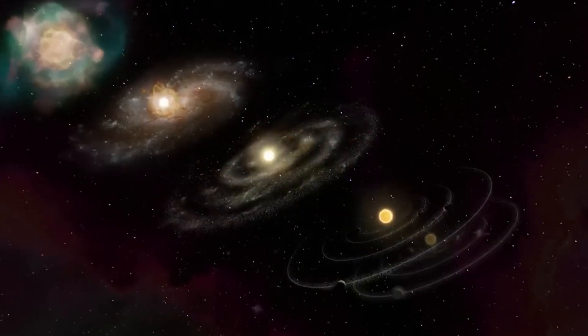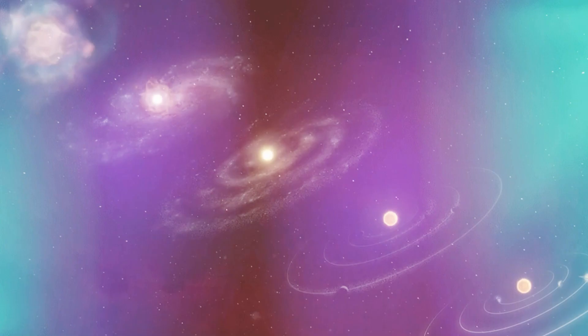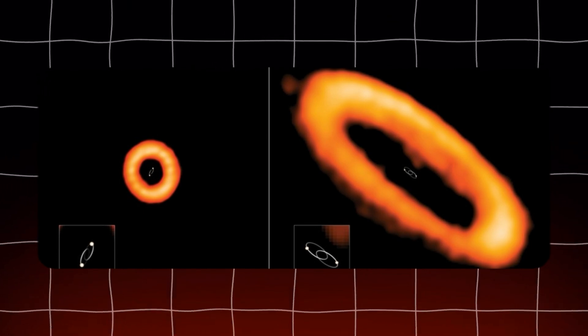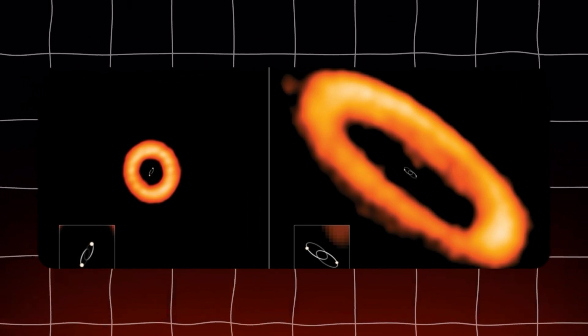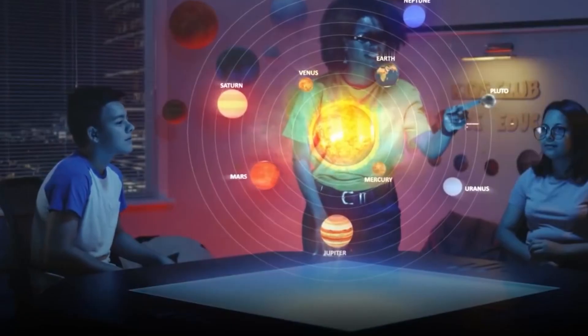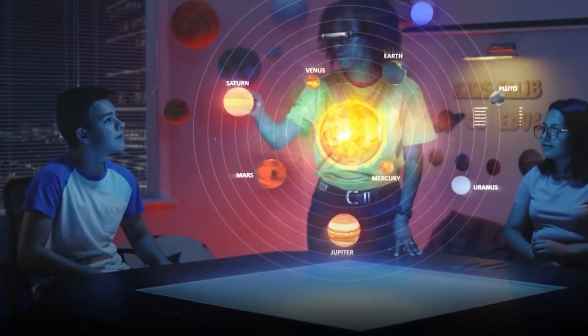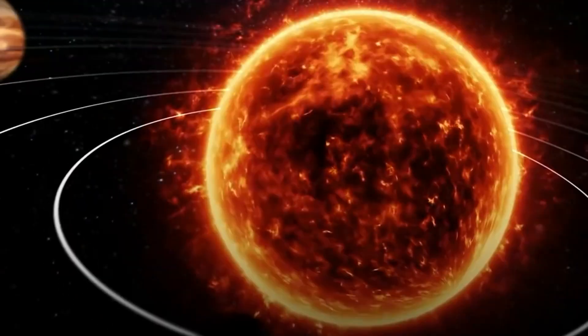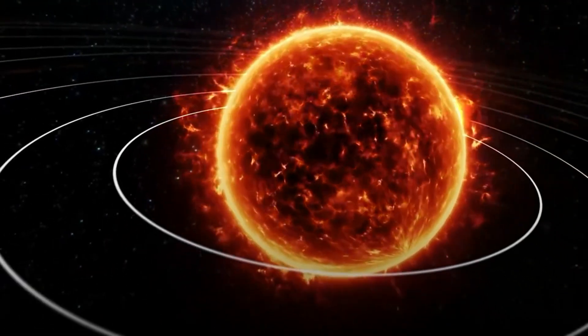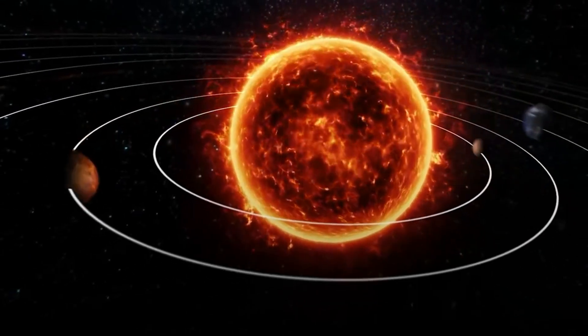As we study other star systems, we find that this pattern repeats. The protoplanetary disks observed around young stars are often aligned in a single plane, indicating that the forces shaping our solar system are universal. These observations combined with computer simulations show how gravitational forces and the dynamics of collapsing gas clouds lead to the formation of planetary systems that align in a single plane.